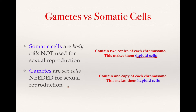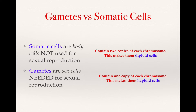Gametes, on the other hand, have gone through a process called meiosis, which leaves them with only one copy of each chromosome. They do not have homologous pairs of chromosomes, and they're said to be haploid cells. You'll see why this is so important shortly.